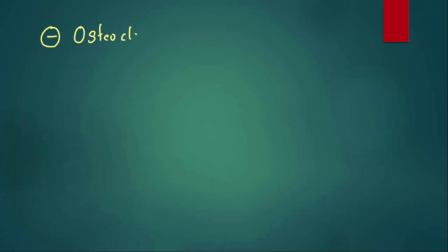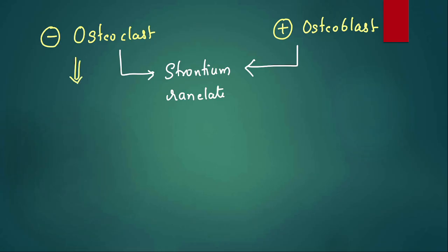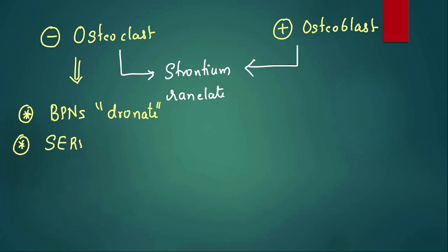Let us understand which drugs inhibit osteoclast and which stimulate osteoblast. A dual action is seen with strontium ranelate. The drugs that inhibit osteoclast include: number one, bisphosphonates — they end with '-dronate', for example alendronate, pamidronate.